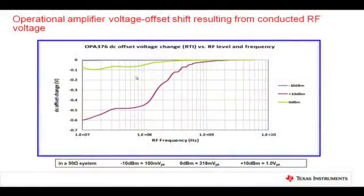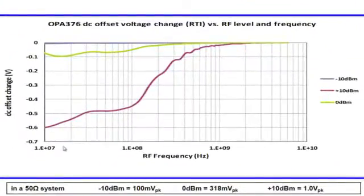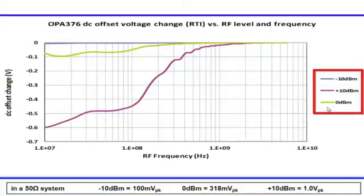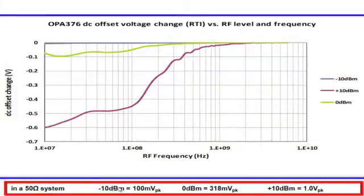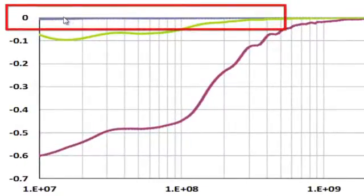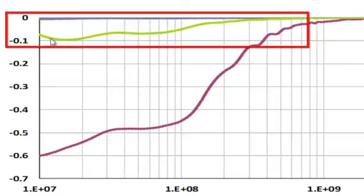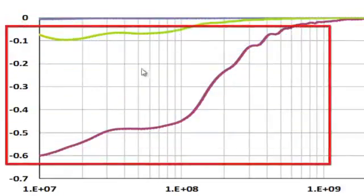This is a sweep across frequency for an OPA376 CMOS operational amplifier. Frequency goes from 10 megahertz to about 5 gigahertz, and on the vertical scale we have a relative DC offset change we're monitoring. We apply three different levels of RF to the input: minus 10 dBm, 0 dBm, and plus 10 dBm. In a 50-ohm system, minus 10 dBm represents 100 millivolts peak, 0 dBm is 318 millivolts, and plus 10 dBm is 1 volt peak. At minus 10 dBm we see almost no change in voltage offset as we sweep frequency. At 0 dBm we see as much as 100 millivolt change at lower frequencies, tapering off as frequency increases. At plus 10 dBm there is a very large change in the offset.